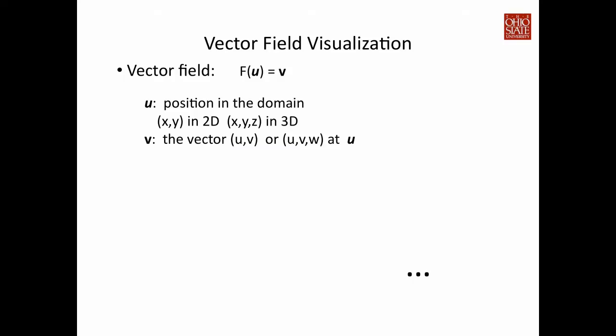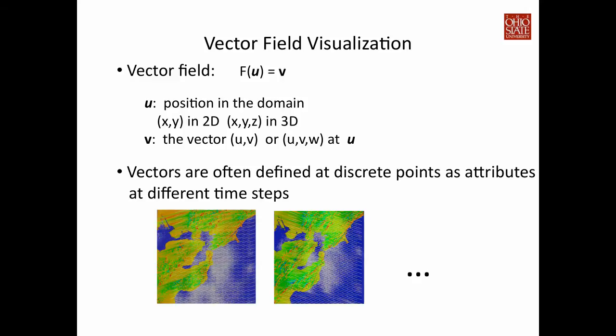So what is a vector field? A vector field is a domain where everywhere at the position u, there is a vector defined, and the dimensionality of vectors depends on the domain. For example, in two-dimensional space, we usually write the vector as u and v. In three-dimensional space, we write as u, v, w. Because of the nature of the simulations, vectors are often defined only at discrete points as attributes.